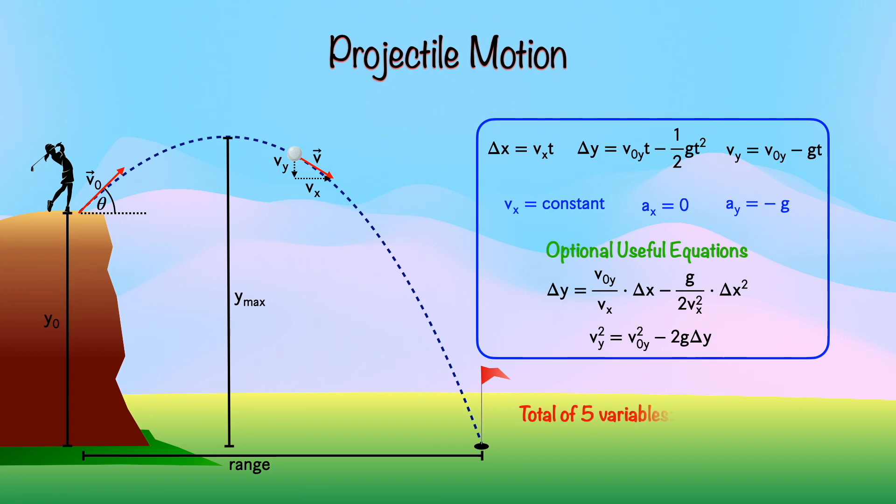So there are a total of five variables, but we only have three equations. So that means that you need to know two of them in order to solve this. So any word problem involving projectile motion will have to give you information for at least two of these variables. So keep that in mind when you're reading these problems, at least two things in here have to be given.